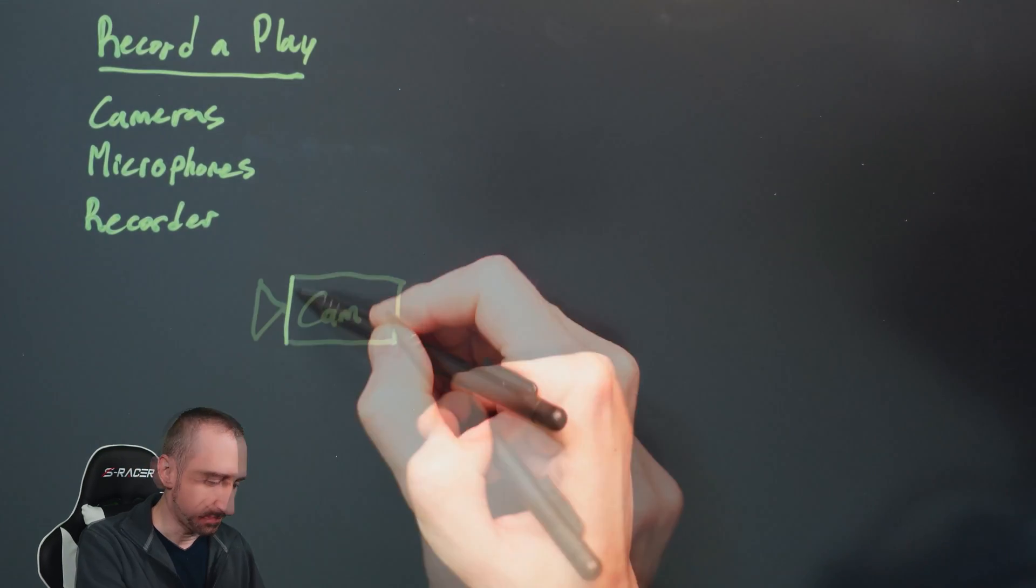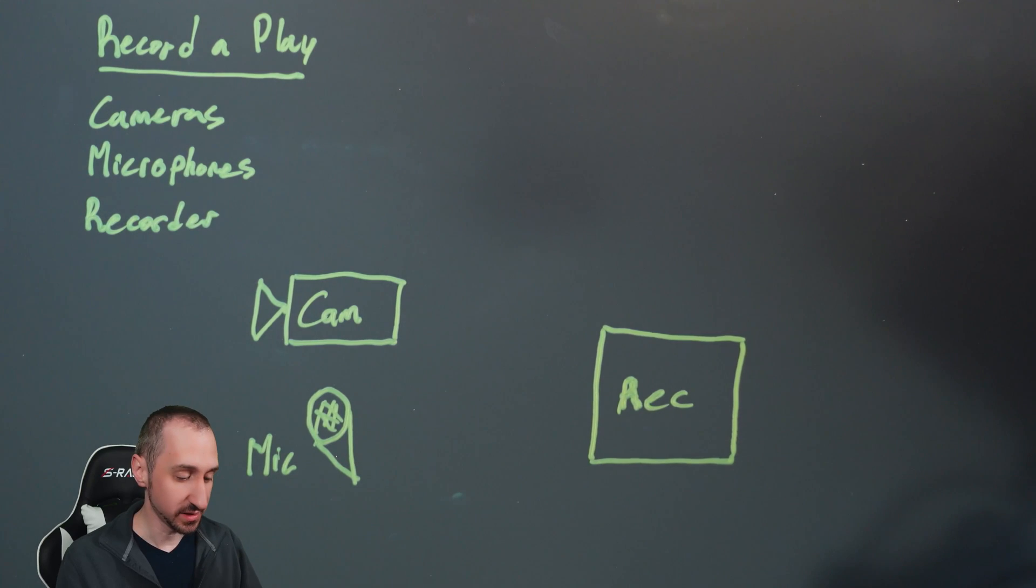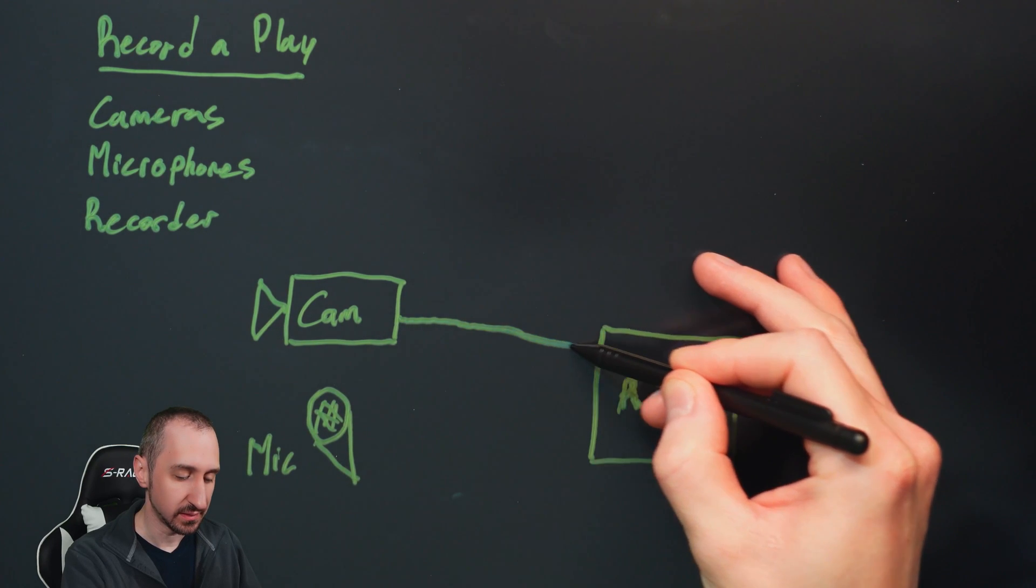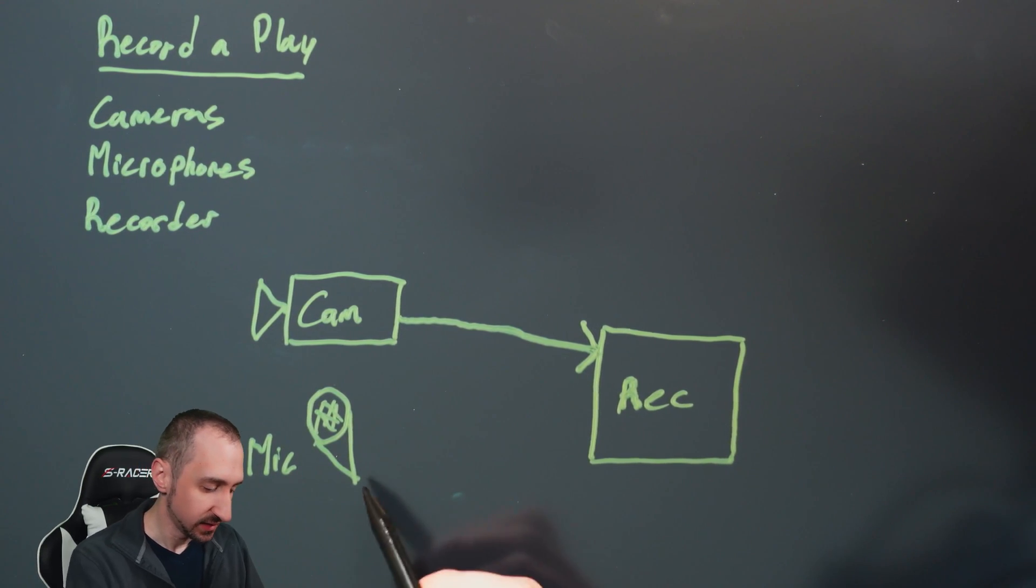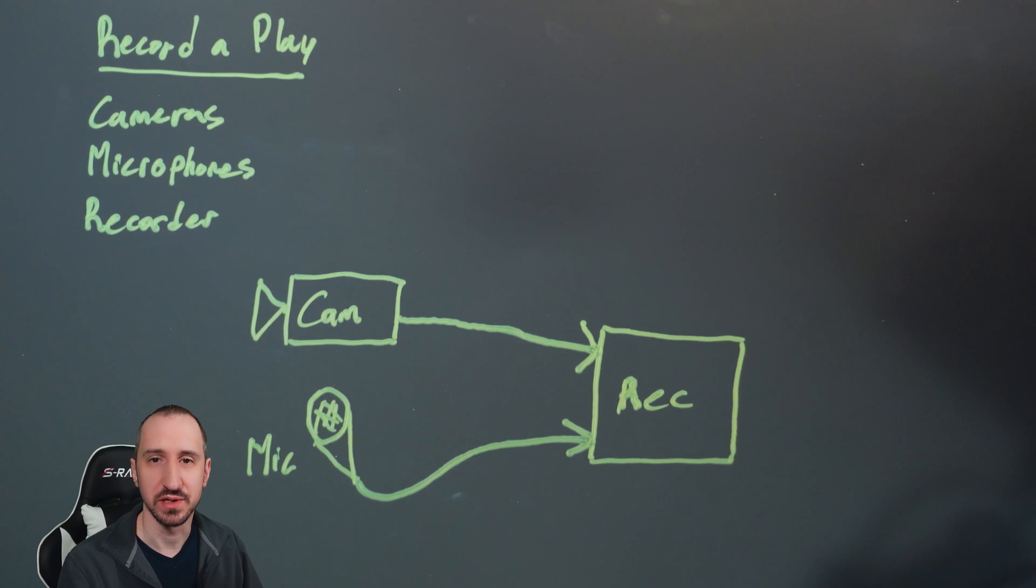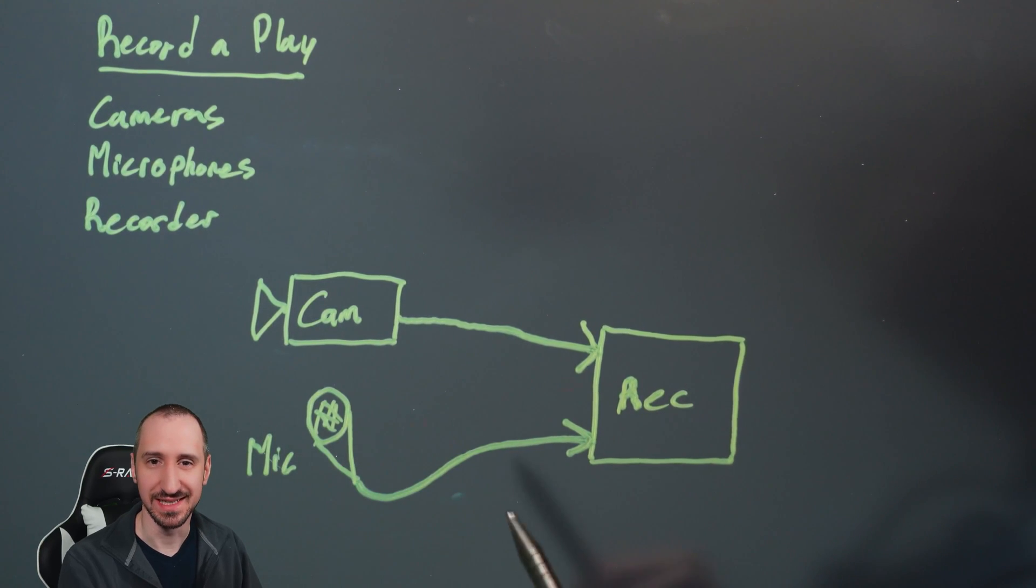We want to apply it strategically to give us the most efficient setup while accomplishing our core objective, which is to record the play. So let's start with a simple example. We'll say we have a single camera, a single microphone, and a single recorder. So here we have our camera, our microphone, and our recorder. The simple relationship between this equipment: the camera is going to output the video and input it into the recorder, and the microphone is going to output its audio and also go into the recorder. We could do this by having a camera that can do all of this in one shot, but for the purposes of this we're just trying to dip our toe into what the signal flow diagram is.